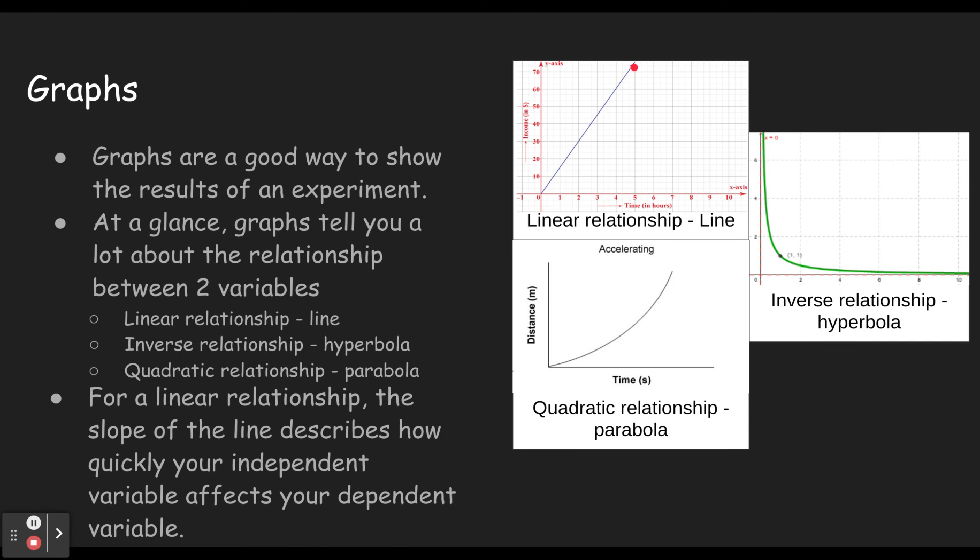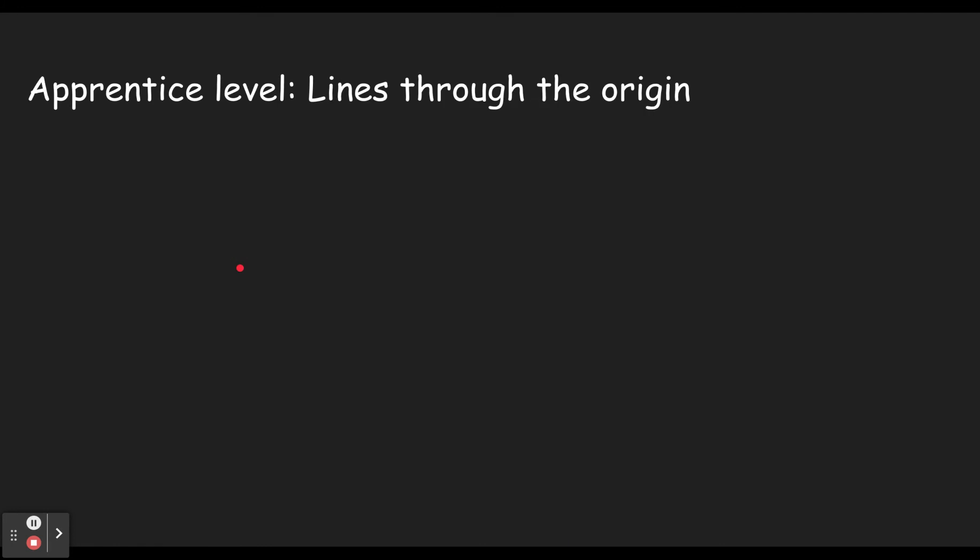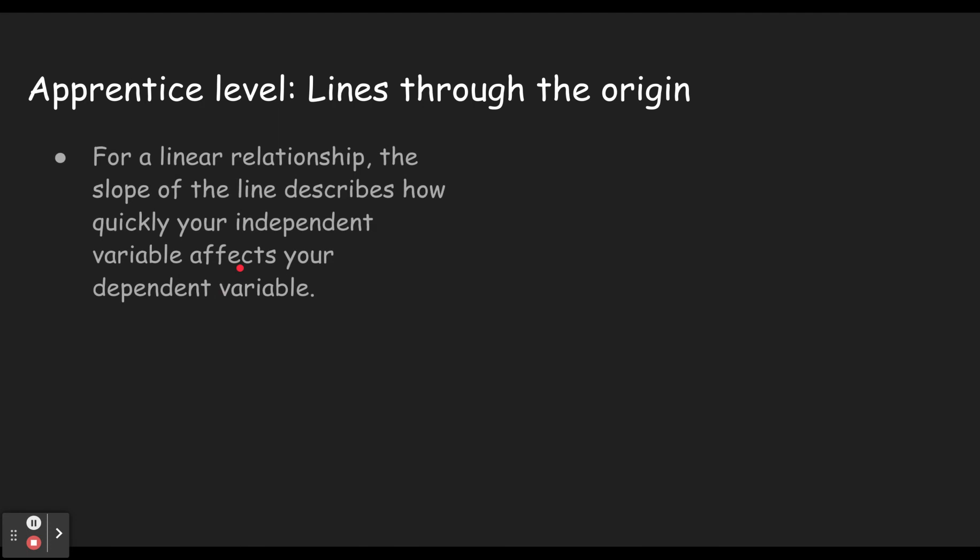Alright, let's take a look at how to calculate the slopes, which is what you're all here for in the first place, right? All right, so the Apprentice level. This one has lines going through the origin. Origin of course is 0, 0. So but how do we calculate a slope? Many of you have done this in math, but here it is.